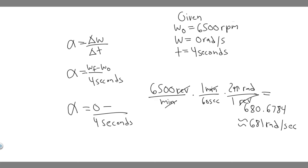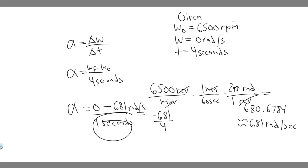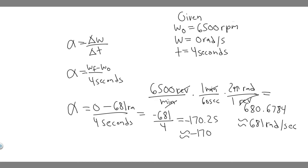Now we can plug it in. We have final minus initial angular velocity: 0 minus 681, over 4. That gives minus 681 over 4. Radians per second on top divided by seconds gives radians per second squared. So 681 divided by 4 equals approximately 170.25, rounding to minus 170. The answer is minus 170 radians per second squared.